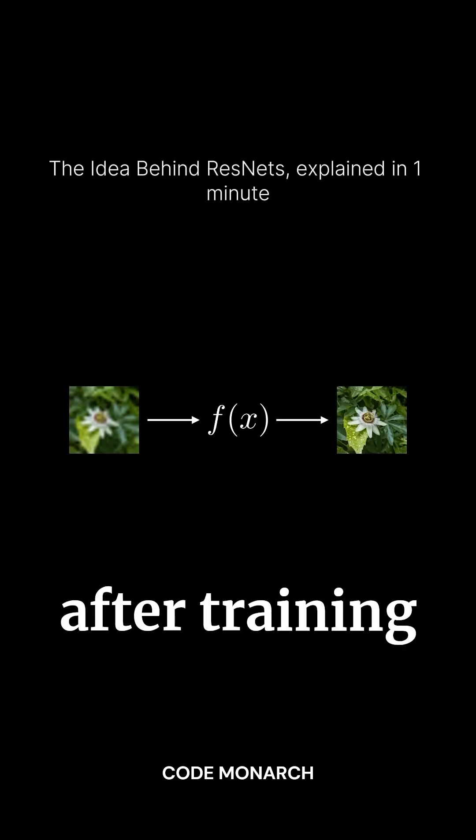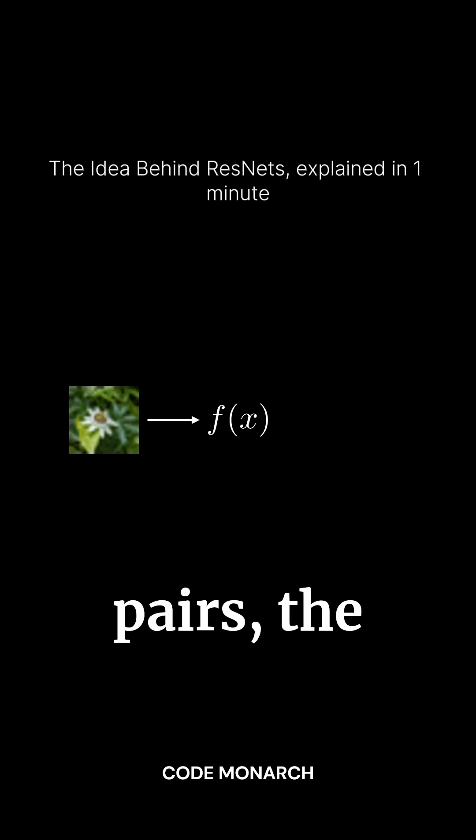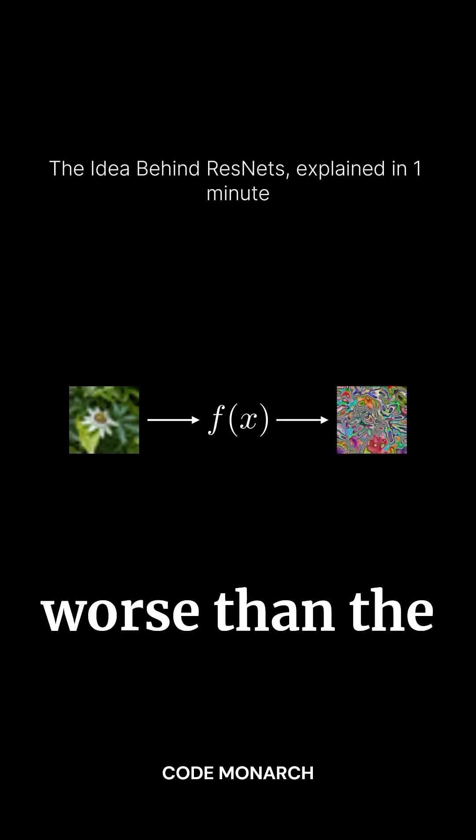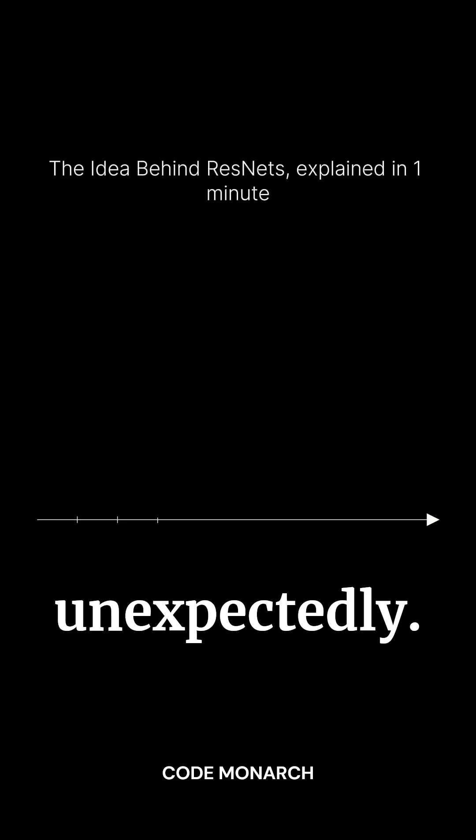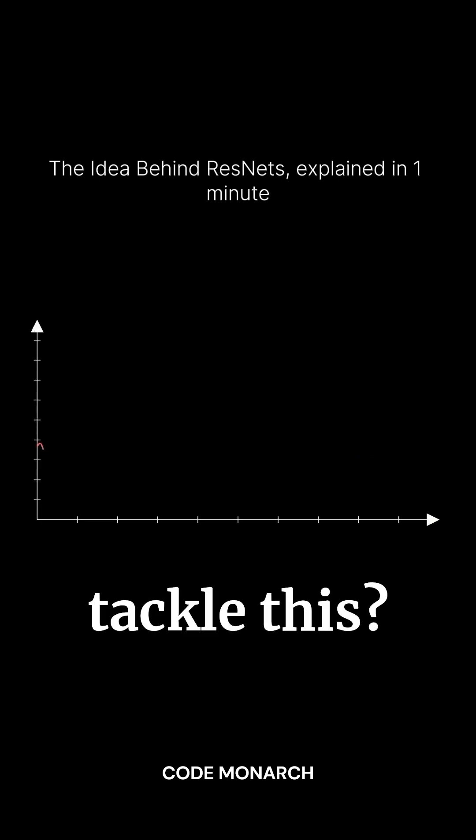Unfortunately, many find that after training on high and low-resolution pairs, the output can actually be worse than the original, causing the training loss to spike unexpectedly. So, how can we tackle this?